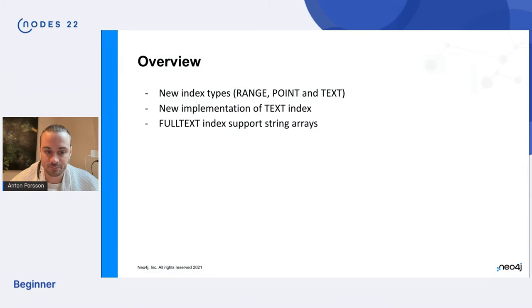All right, so let's dive in. In Neo4j 5, we introduce a few new index types, range point and text, as I think John mentioned. So we will talk a little bit about that. We will also talk about a new implementation of the text index type and the benefits of that. And in the end, we'll talk about what's new with full text indexes.